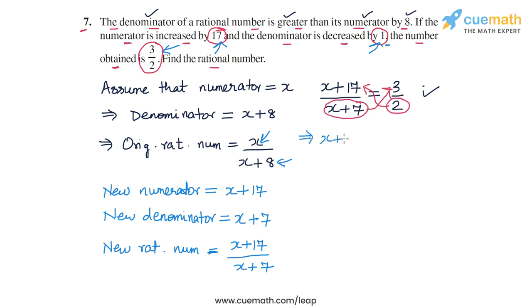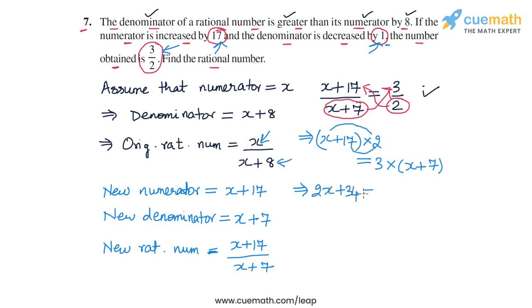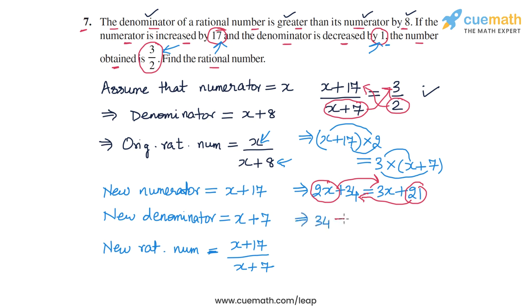On the left side we get x plus 17 times 2, and on the right side we get 3 times x plus 7. Expanding: the left side gives 2x plus 34, and the right side gives 3x plus 21. Now let's take the variable terms together — transpose 2x to the right side as minus 2x, and transpose 21 to the left side as minus 21. So we get 34 minus 21 on the left and 3x minus 2x on the right.